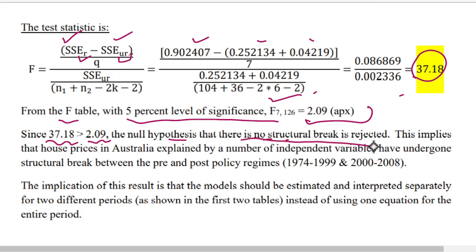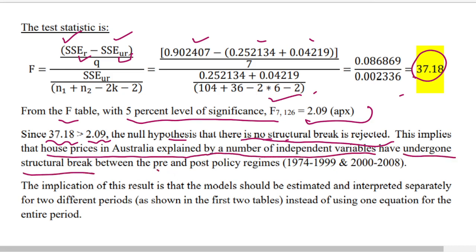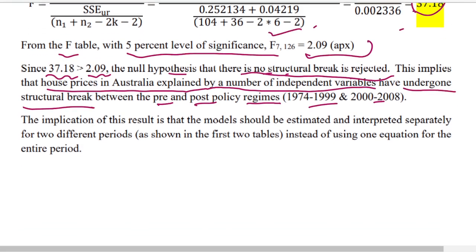Using these values, the calculated F is greater than the critical value of 2.09 at the five percent level of significance, so we reject the null hypothesis of no structural break. This implies that house prices in Australia, explained by the independent variables, have undergone a structural break between the pre- and post-policy regimes. Hence, we have proved that there is an impact of the regulatory policy changes introduced in 1999 and 2000.